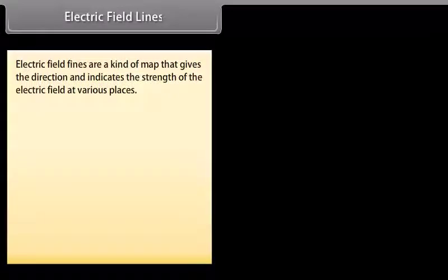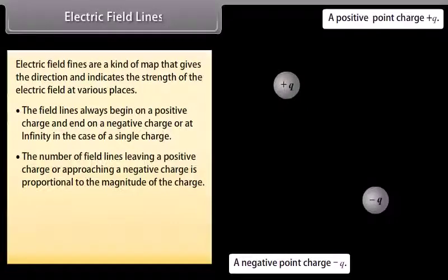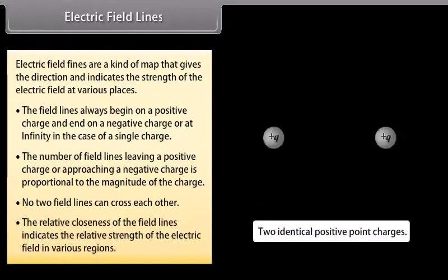Electric field lines are a kind of map that gives the direction and indicates the strength of the electric field at various places. The field lines always begin on a positive charge and end on a negative charge or at infinity. The number of field lines leaving a positive charge or approaching a negative charge is proportional to the magnitude of the charge. No two field lines can cross each other, and the relative closeness of the field lines indicates the relative strength of the electric field.